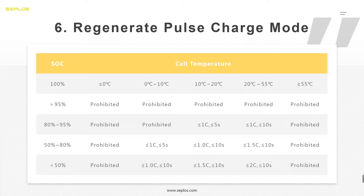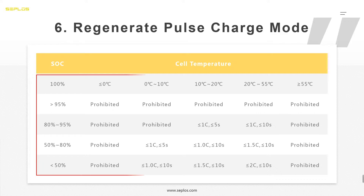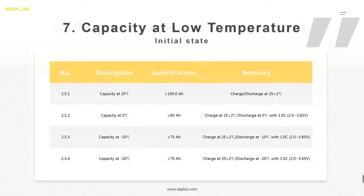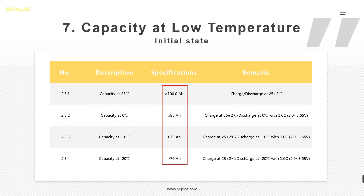Next is regenerative pulse charging mode. This charging mode is normally used in electric vehicles. When you brake your electric vehicle, the motor creates a large current. Some systems regenerate that power back into the battery. If you need this function, you need to pay attention to this part of the data sheet.